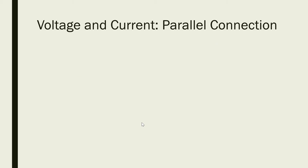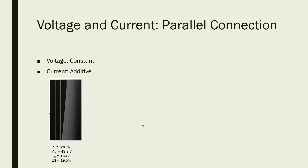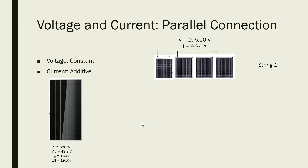Now, voltage and current in a parallel connection. As we have said, for a parallel connection the voltage is constant while the current is additive. From the last example where we had four solar panels connected in series, we calculated that the voltage across this series connected set of solar panels would be 195.20 volts and a current of 9.94 amperes. In solar terms, this series connected set of solar panels is also called a string.